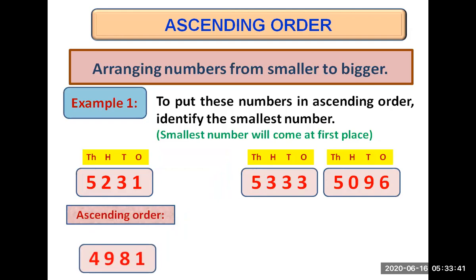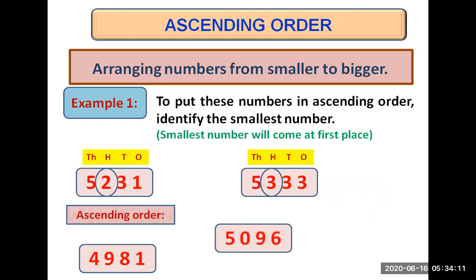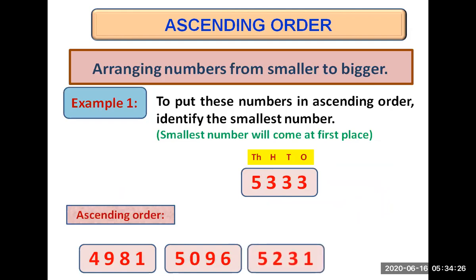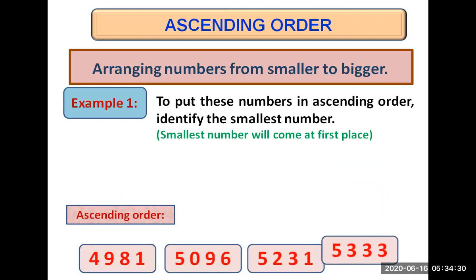Among the remaining three numbers, all have five at their thousands place. So we compare the hundreds place digits. The last number has zero at its hundreds place, whereas the other two have two and three. As zero is smaller than two and three, the number 5031 comes next. Among the remaining two, we compare further and 5231 comes at third place, while 5333 comes at last place.